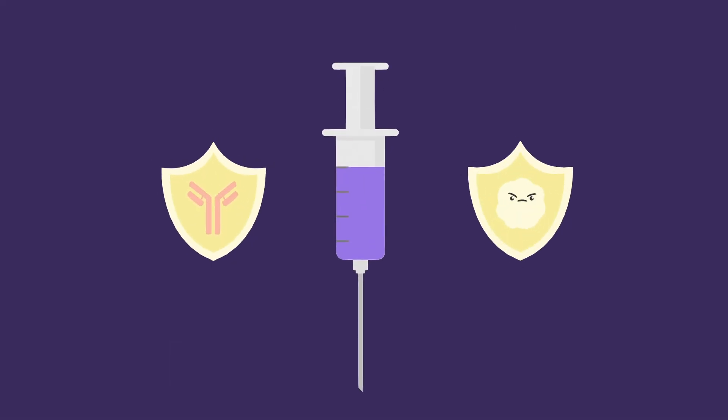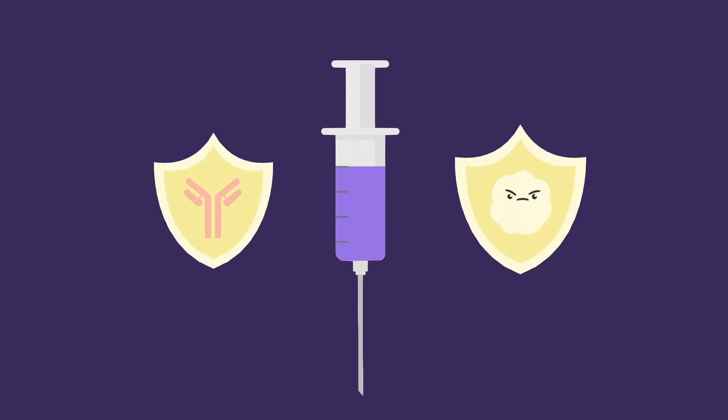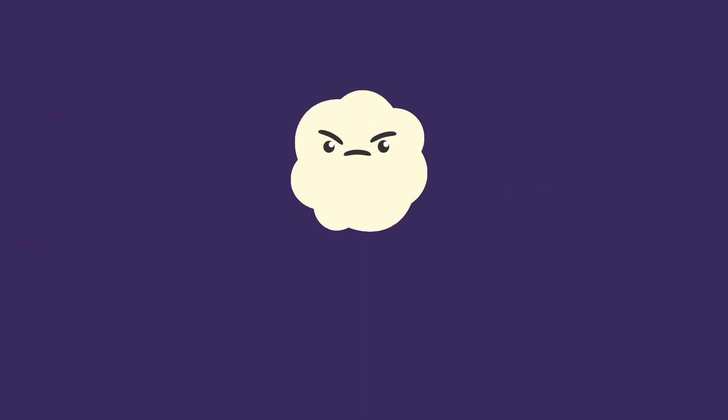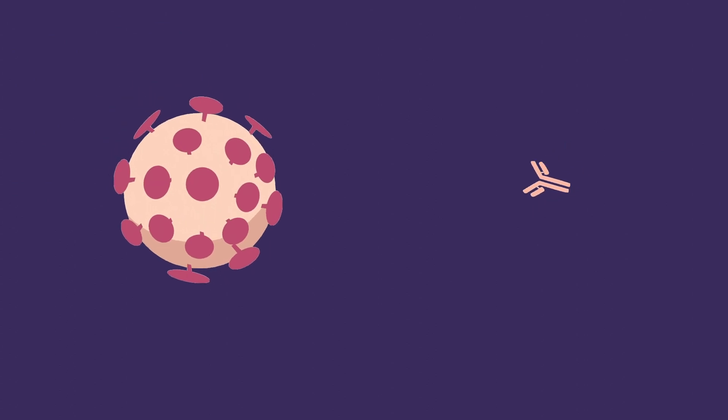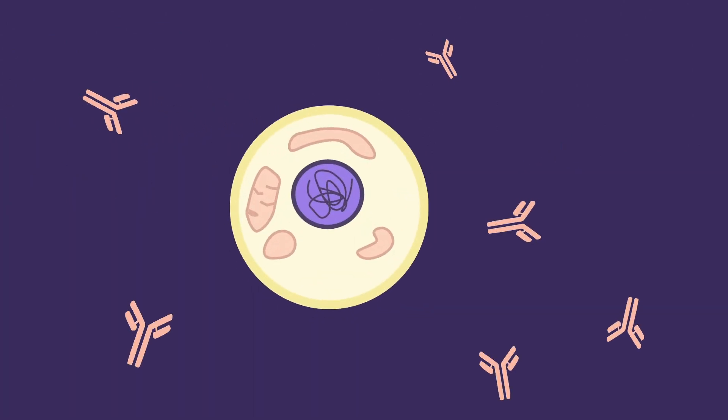The two kinds of immunity that vaccines try to generate when we give them to people are antibody immunity and cellular immunity. First, let's talk about antibody immunity. Antibodies are proteins that are secreted from white blood cells whose function is to bind to viruses. Because antibodies are located outside of the cell, they can only stop viruses before they have either entered or exited the cell.